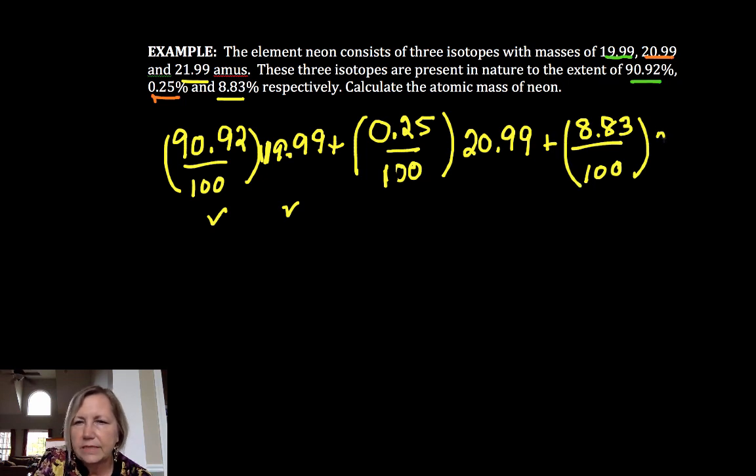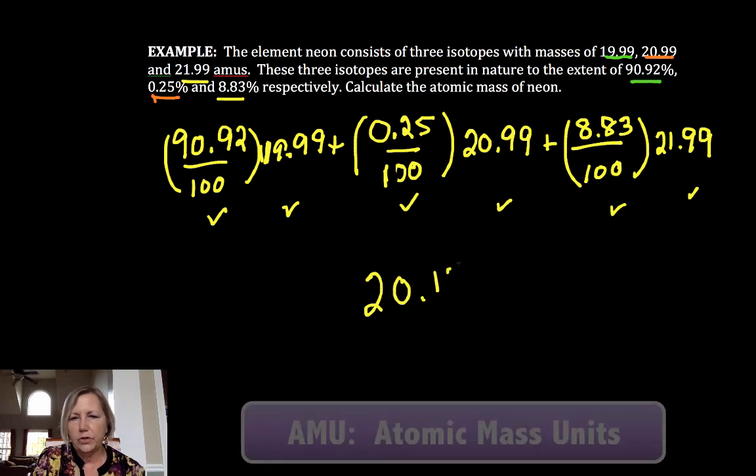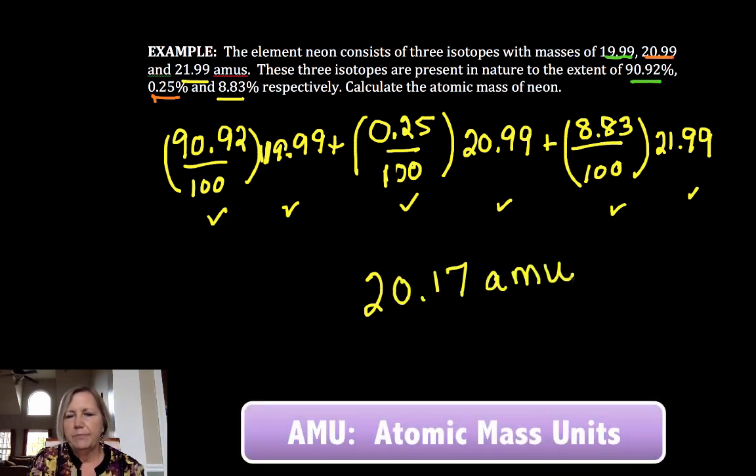100, okay. There, I got it straight for you. Alright, fraction times mass plus fraction times mass plus fraction times mass. And if you do that mathematics, and if I did mine correctly, and you always want to check, 20.17 atomic mass units.